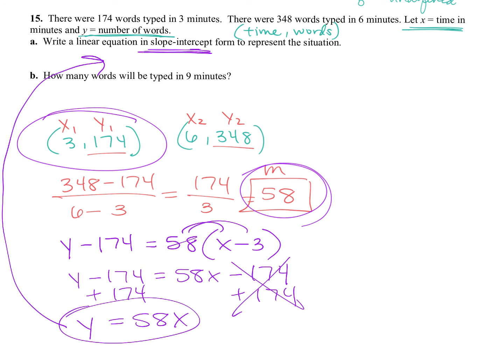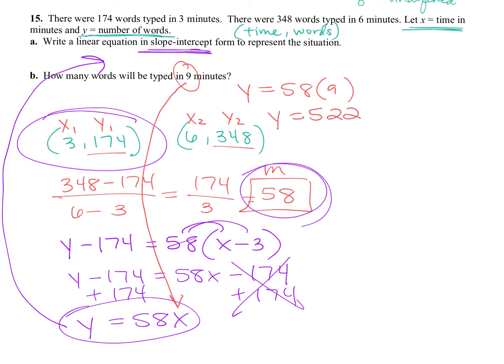How many words would be typed in 9 minutes? Plug 9 in for x — that's your number of minutes. So y equals 58 times 9, and y is 522. For a real-world problem, answer the question: 522 words would be typed.